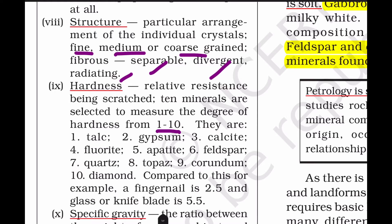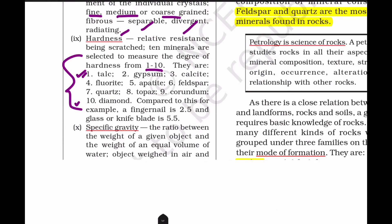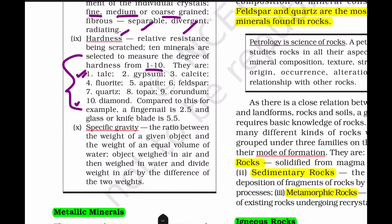On the Mohs hardness scale, the first is talc - very soft - and the hardest is diamond at rank 10. The scale goes: talc, gypsum, calcite, fluorite, apatite, feldspar, quartz, topaz, corundum, diamond.